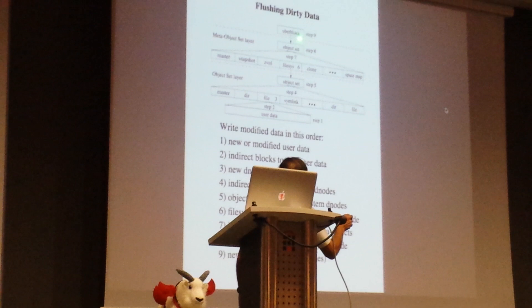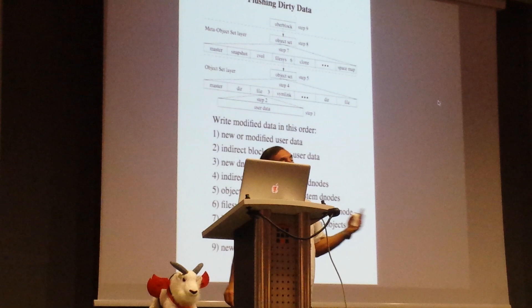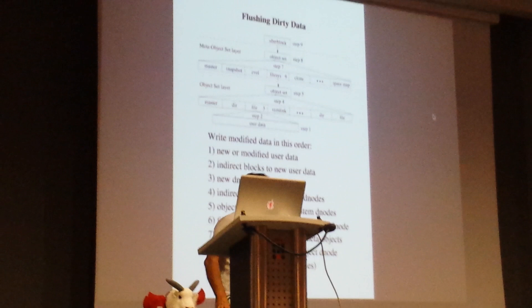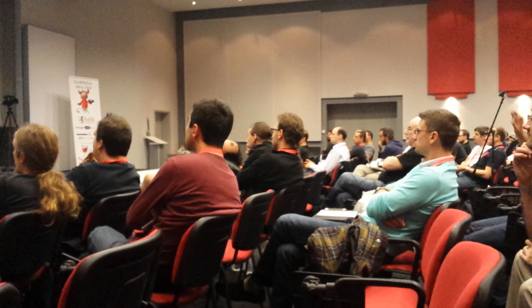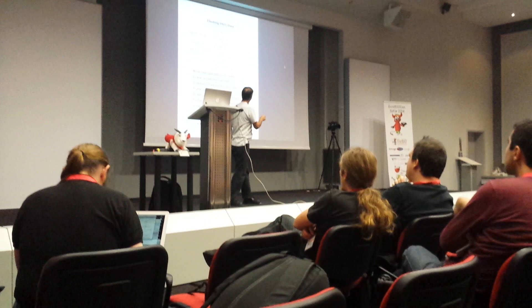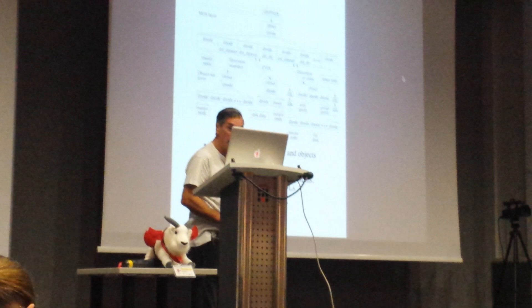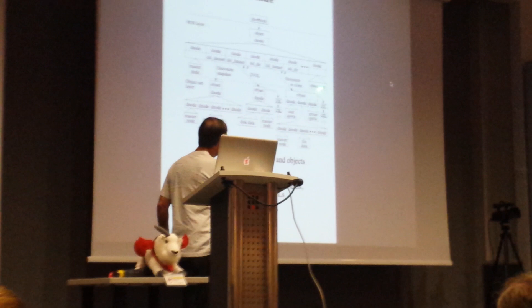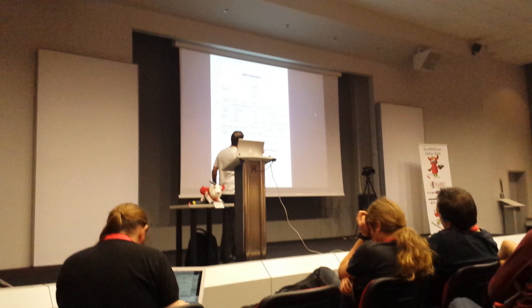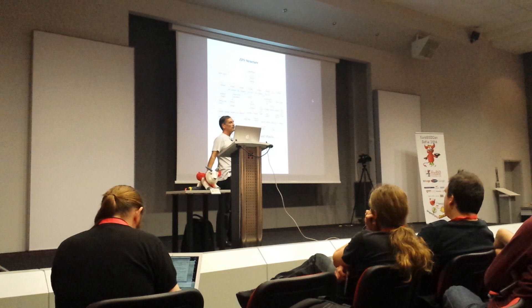The uber block is the only thing that we ever overwrite in a ZFS file system. An audience member points out that a block was allocated out of the space map, so the space map has to change too. The space map is a file, so we've changed one thing there and had to change all the indirect things up to that point. So additional blocks have to be allocated and dealt with.